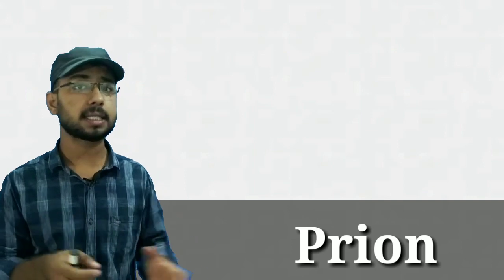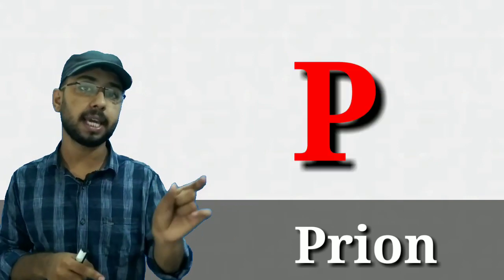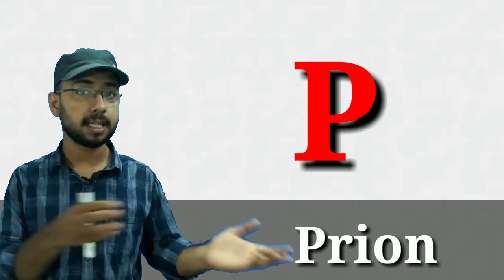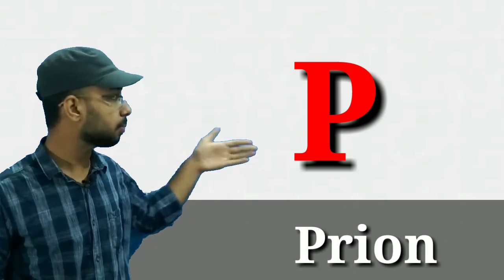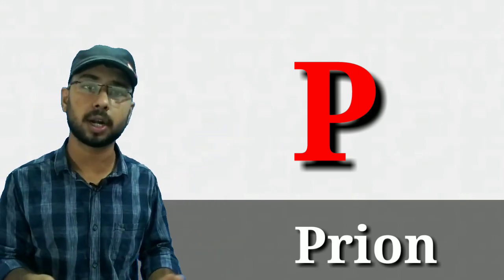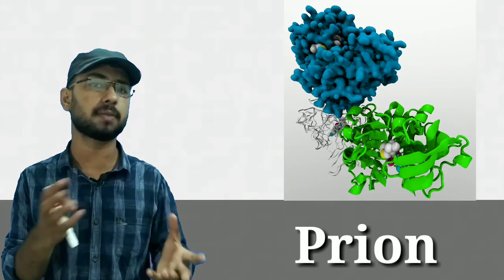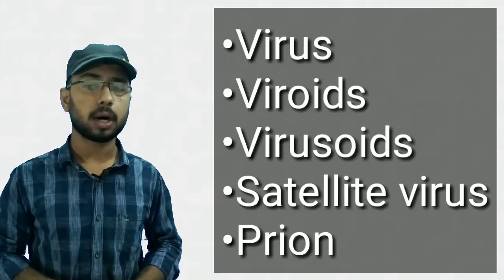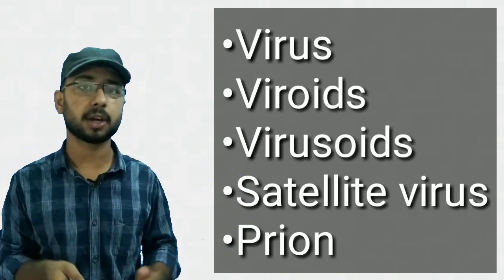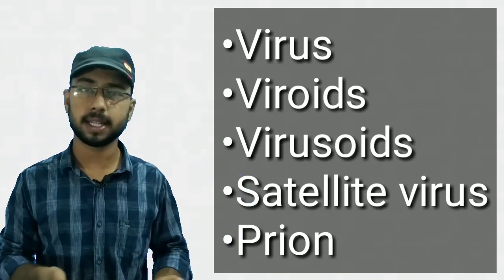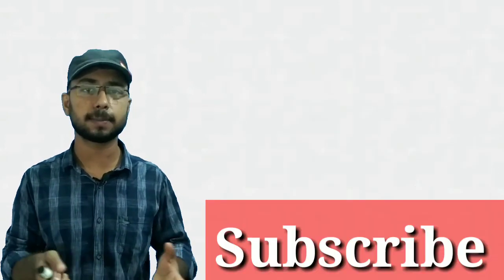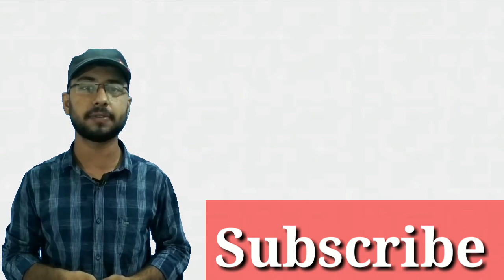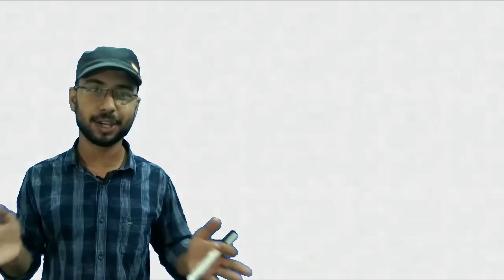The fifth mnemonic — Prions. From the first letter P, recall Protein. Prions are misfolded proteins — a tangled structure like a bundle of threads. That's it. So these are the five points you can recall at any time to understand the difference between them. I hope this video is helpful. If you liked it, give it a thumbs up, ask questions in the comment box, and subscribe the channel for more interesting videos. Thank you so much for watching — see you soon!